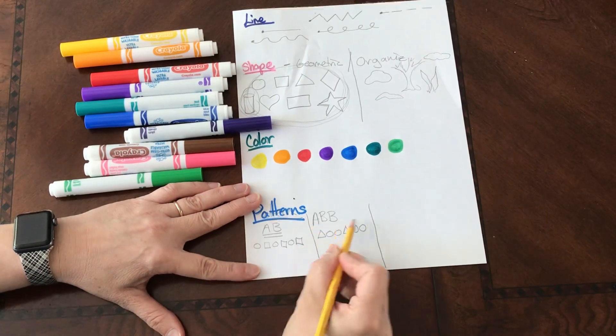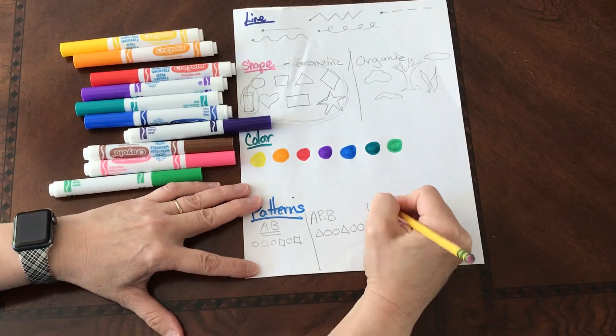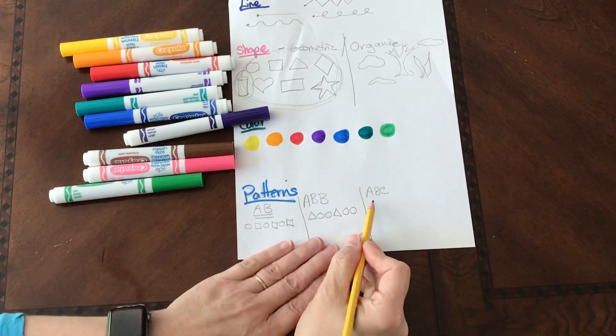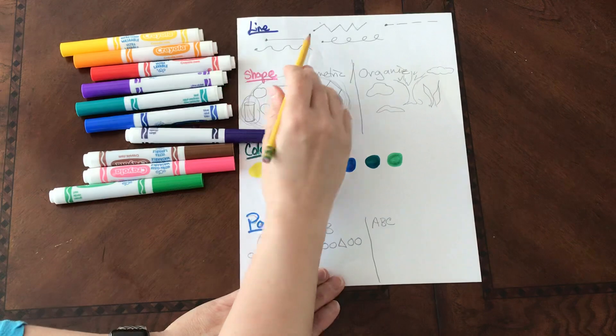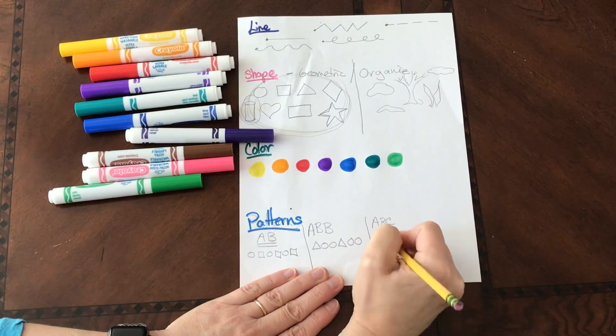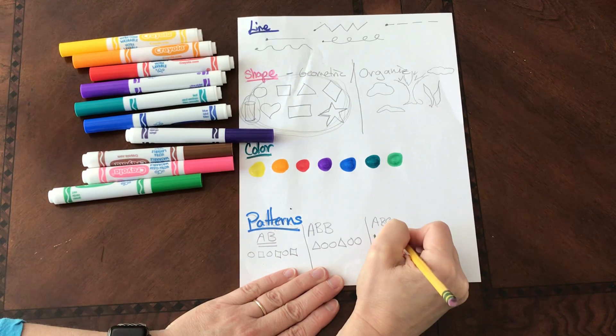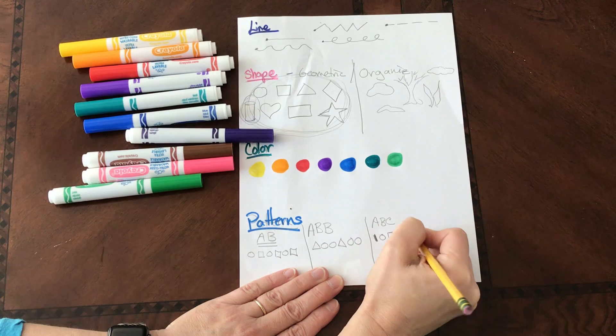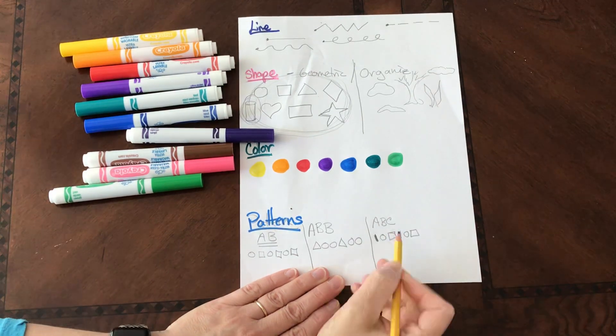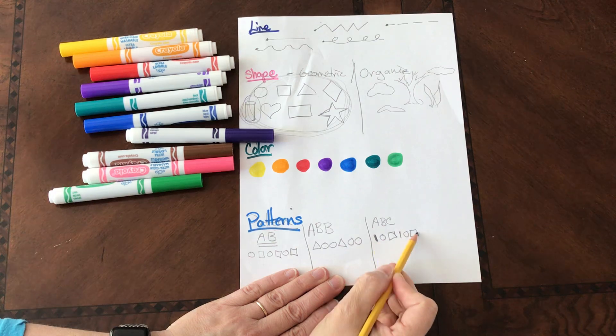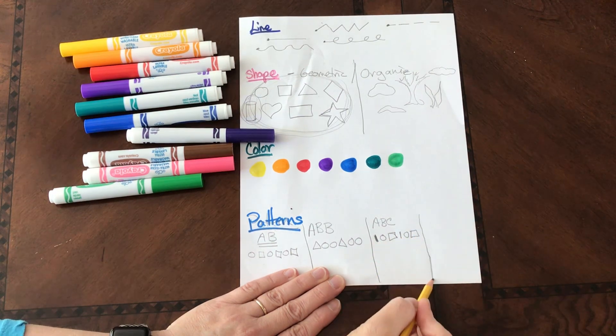We could also have an A-B-C pattern. And an A-B-C pattern could also include lines. So I could have A-B-C, A-B-C. So I'm incorporating line, I'm incorporating shape.